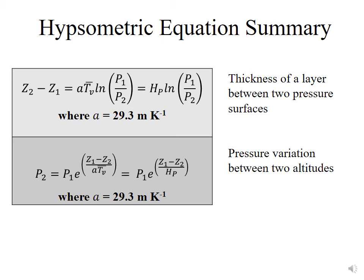If instead you're not interested in the thickness of the layer, but you're interested in the pressure variation between the two altitudes, you could then rearrange that equation and solve for P2 in terms of the height difference, Z1 minus Z2. And so you have an equation that you can use to calculate the pressure differences.